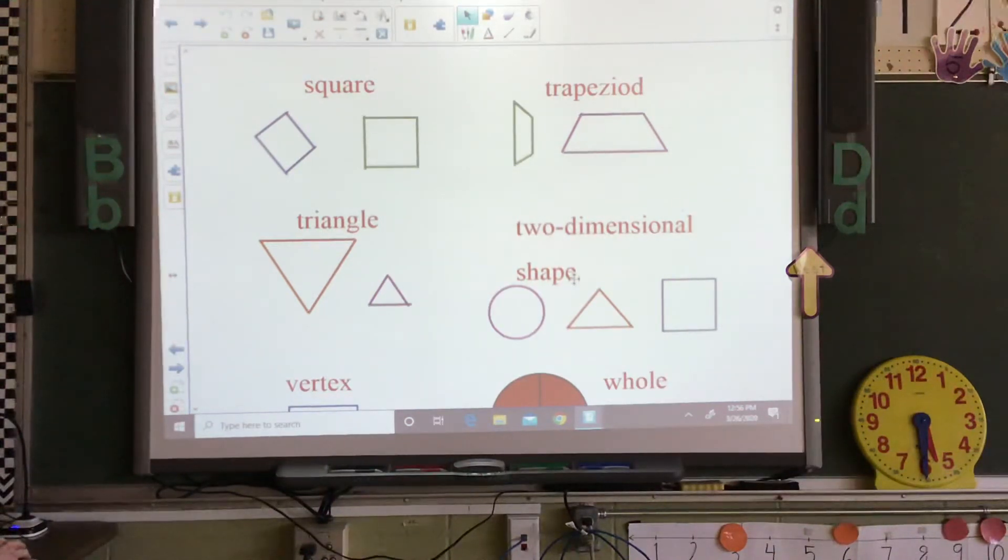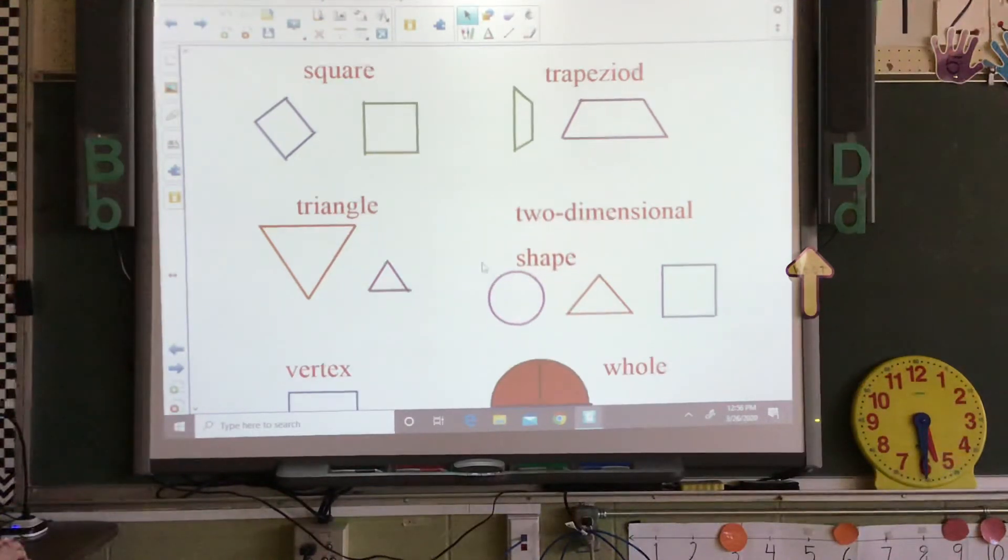Two dimensional shape. A flat shape such as a circle, a triangle or a square. Just flat like a piece of paper.